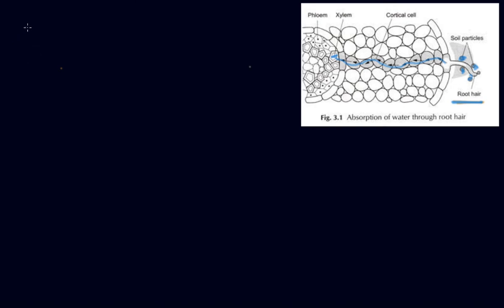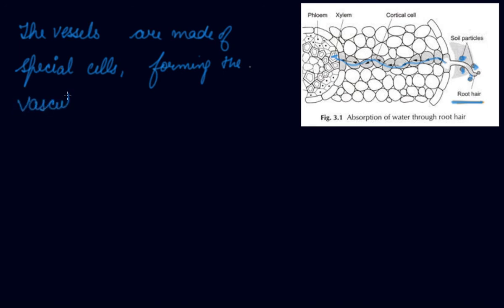The vessels which are xylem and phloem are made of special cells forming the vascular tissue. A tissue is a group of cells that perform specialized function in an organism.